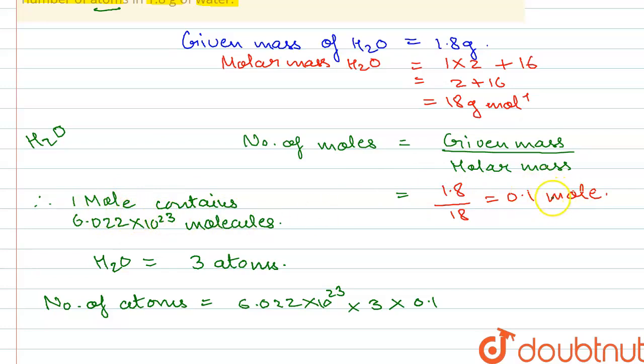of molecules in 0.1 mole. And in each molecule, there are three atoms, so we multiply by three. We get 1.8066 × 10^23 atoms. That is the answer to the question. Thank you.